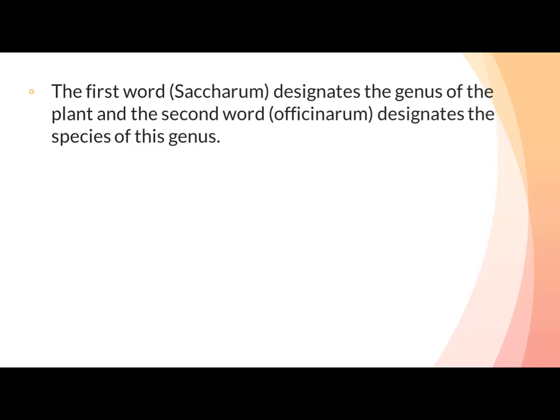They may be descriptive with reference to some common characteristic of the included species. The first word Saccharum designates the genus of the plant, and the second word officinarum designates the species of the genus. So in any plant name, it consists of two words: the first word is the generic name (here Saccharum) and the second word is the species name (officinarum).